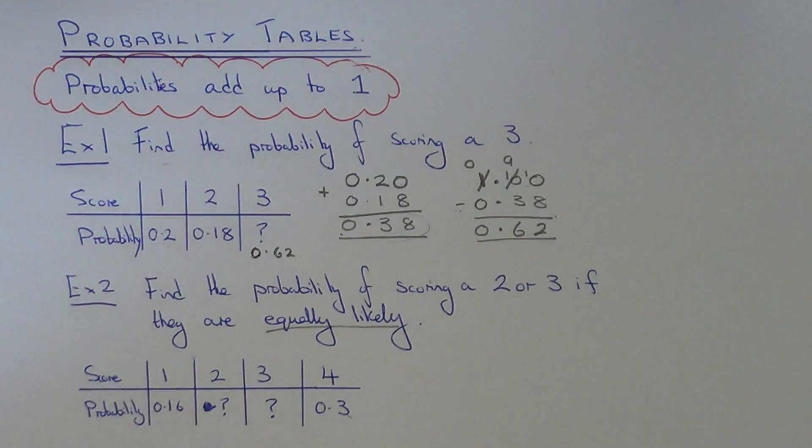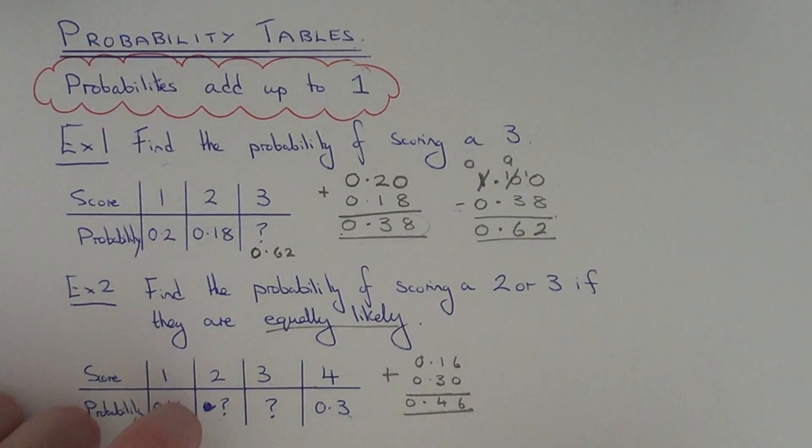So let's do what we did before then, add up the probabilities that we've given in the table. So let's add up 0.16 and 0.3. So if we add these up, we get 0.46.